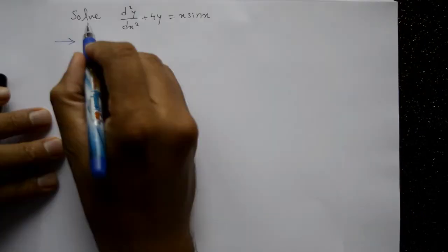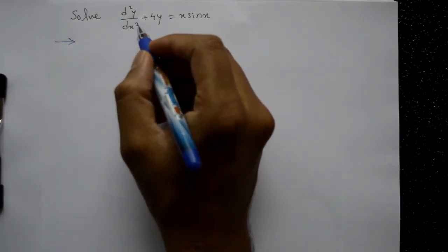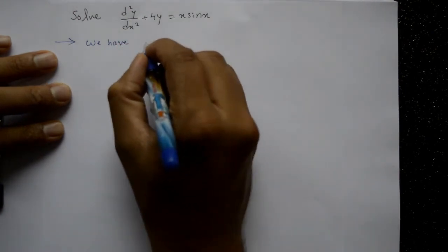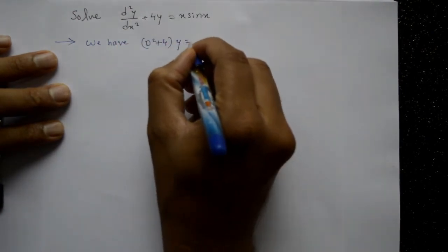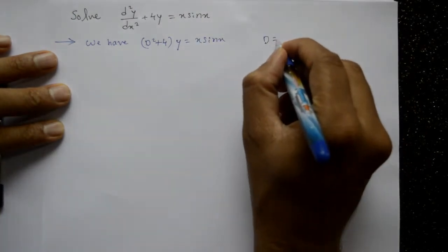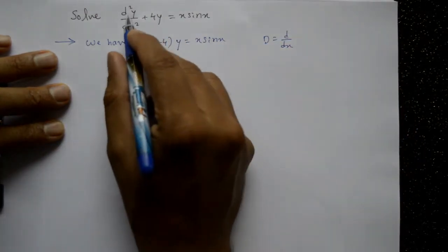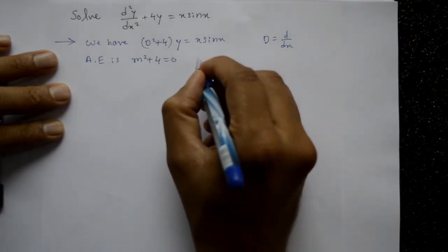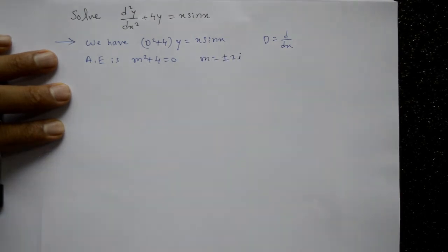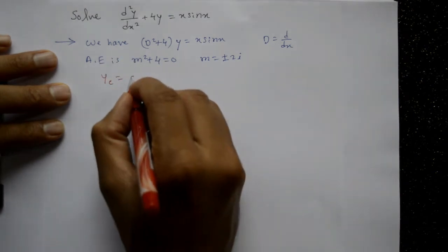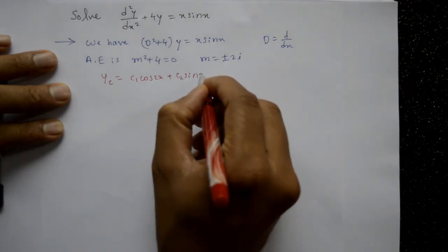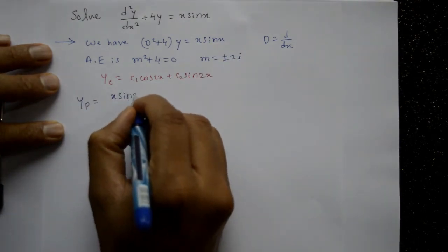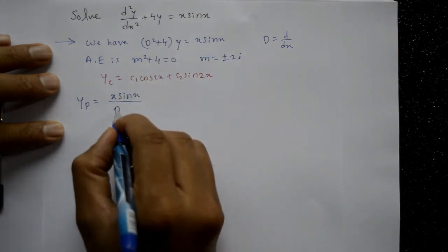Second example: Solve d²y/dx² + 4y = x·sin(x); find the complete solution. We write this as (D²+4)y = x·sin(x), where D stands for d/dx. The auxiliary equation is m²+4=0, so m = ±2i. The complementary function is yc = c₁·cos(2x) + c₂·sin(2x).